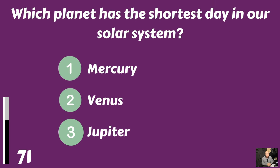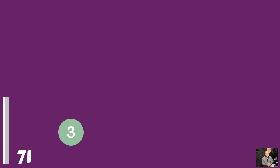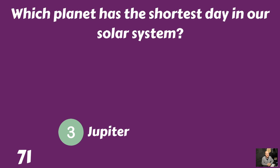Which planet has the shortest day in our solar system? Is it Mercury, Venus, or Jupiter? The shortest day in our solar system belongs to Jupiter.